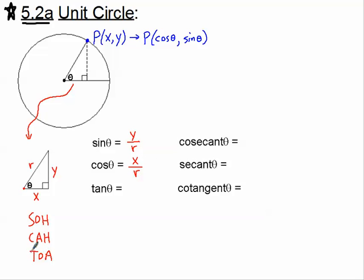The TOA: tangent is the opposite leg divided by the adjacent leg, so that would be y divided by x. The tangent will always equal the sine divided by the cosine, and that means it's y divided by x. Since the unit circle has a radius of 1, dividing by 1 doesn't change anything — that's why the y-coordinate will always be the sine, and the x-coordinate will always be the cosine. The tangent will always be the sine divided by the cosine, which is the y-coordinate divided by the x-coordinate.